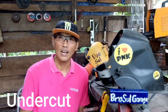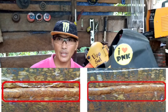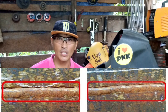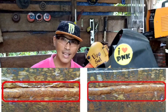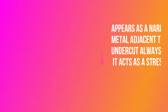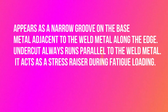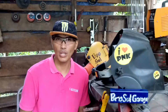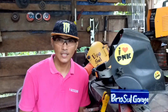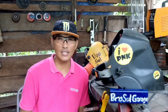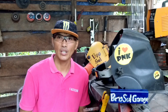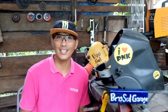Undercut. Undercut occurs as a narrow groove on the base metal adjacent to the weld metal along the edges. Undercut always runs parallel to the weld metal. It acts as a stress raiser during fatigue loading.